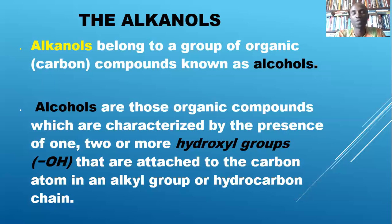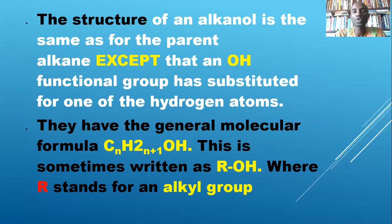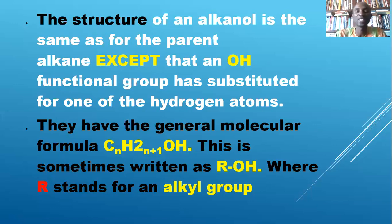An alkanol can have one, two, or three OH groups attached to a hydrocarbon compound. The structure of an alkanol is the same as that of the parent alkanes, except that an OH functional group has been substituted for one of the hydrogen atoms. When one of the hydrogen atoms is displaced and replaced by an OH group, it becomes an alkanol as a homologous series.